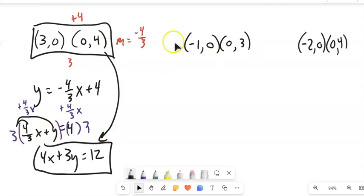Okay, let me do that again here. Let's find that slope. 0 to 3, that's an increase of 3. Negative 1 to 0, that's an increase of 1. So my slope is 3 over 1, which is 3.